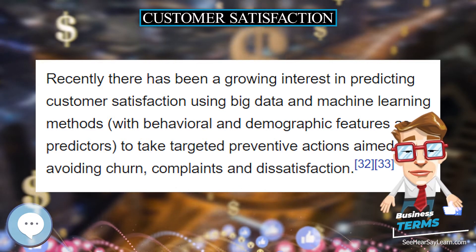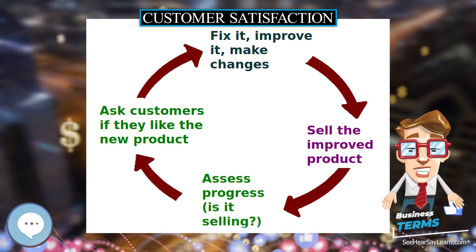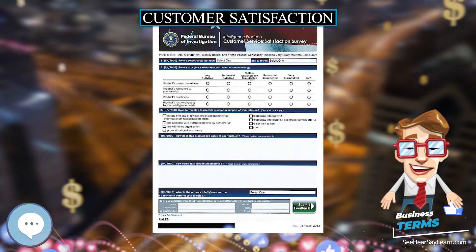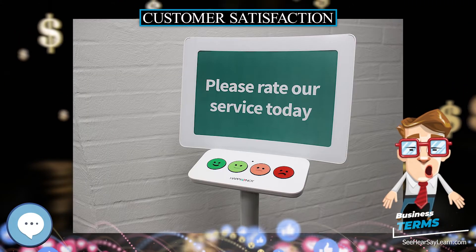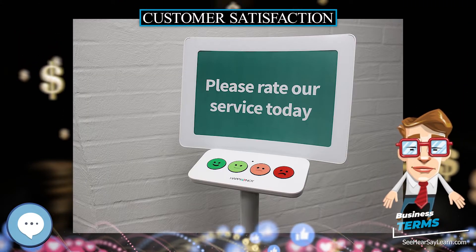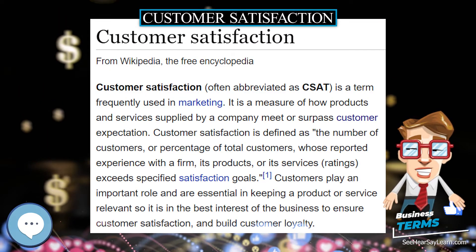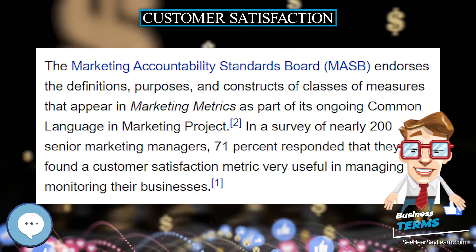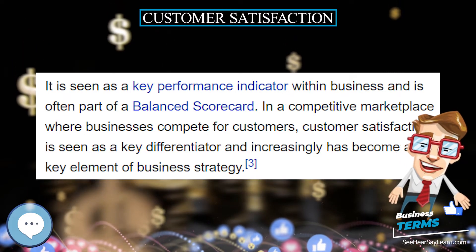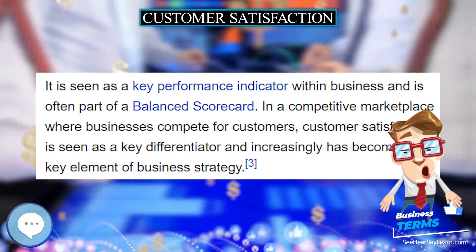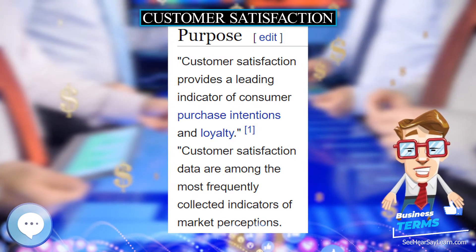Perceived product performance is considered as an important construct due to its ability to allow making comparisons with the expectations. It is considered that customers judge products on a limited set of norms and attributes. Olshavsky and Miller, 1972, and Olson and Dover, 1976, designed their researches to manipulate actual product performance, and their aim was to find out how perceived performance ratings were influenced by expectations. These studies brought out discussions about explaining the differences between expectations and perceived performance.